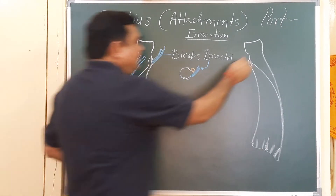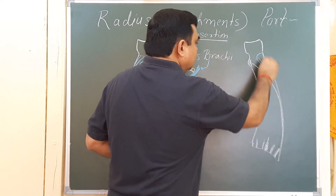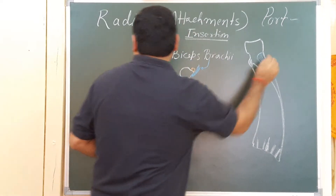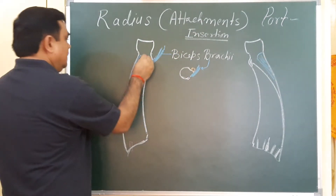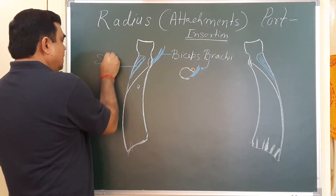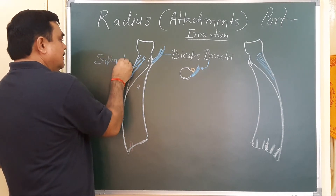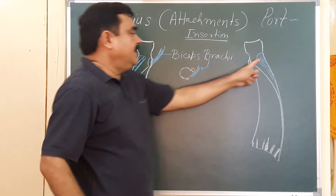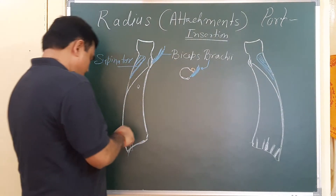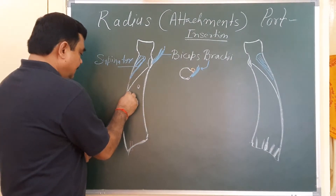Another muscle is the supinator. This is the supinator muscle, inserted here on the radius.